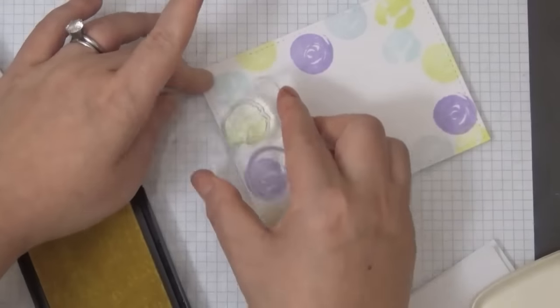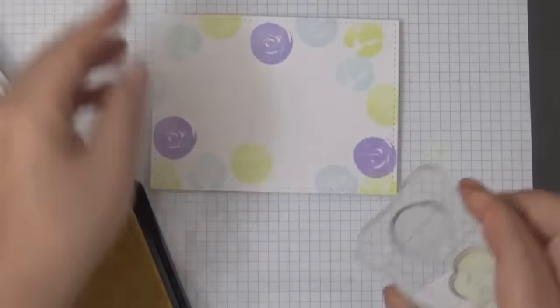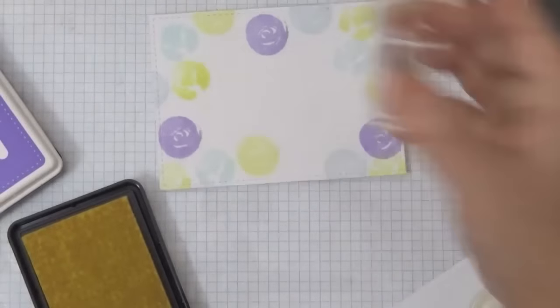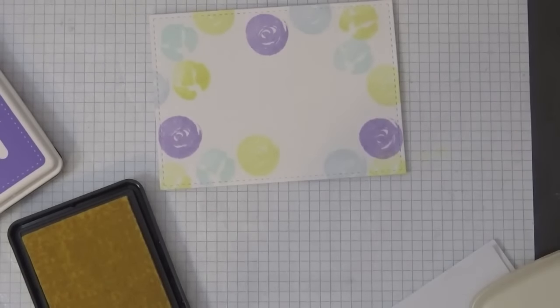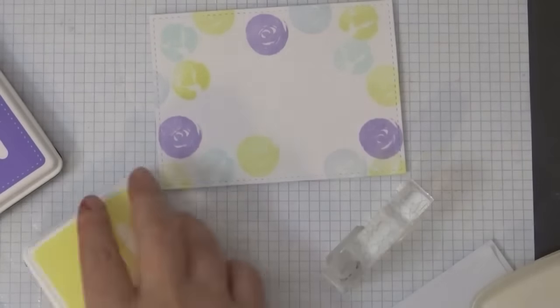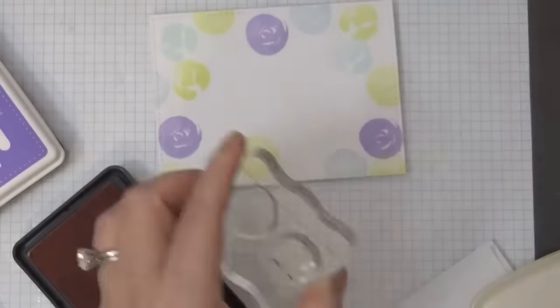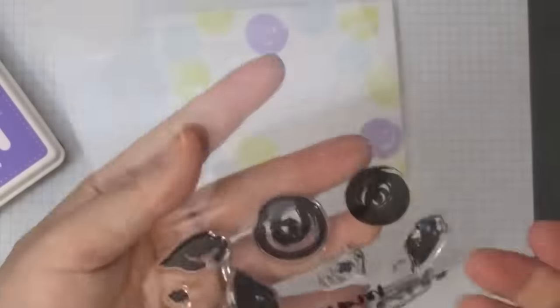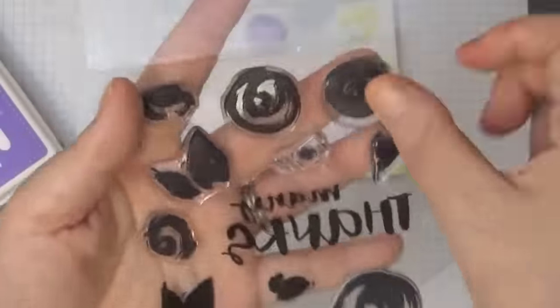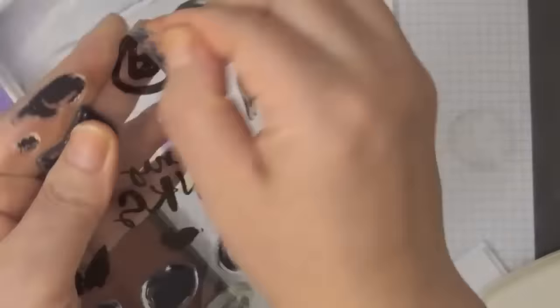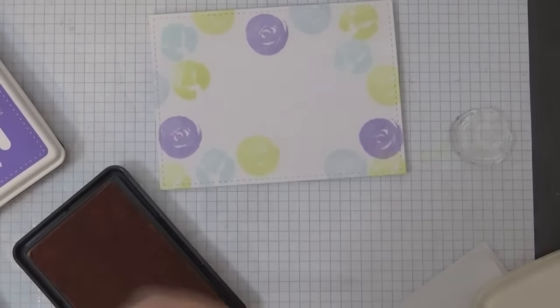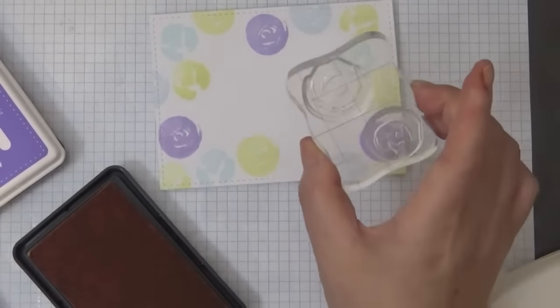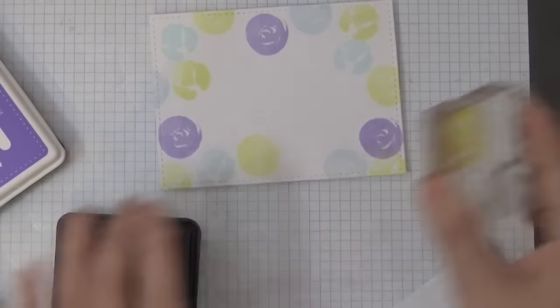Again here I'm just randomly stamping, this is two different types of flowers that I chose. Simon Says Stamps inks are kind of like the Hero Arts ink, when you first stamp it it looks kind of blotchy but then as it absorbs into the paper it evens out.